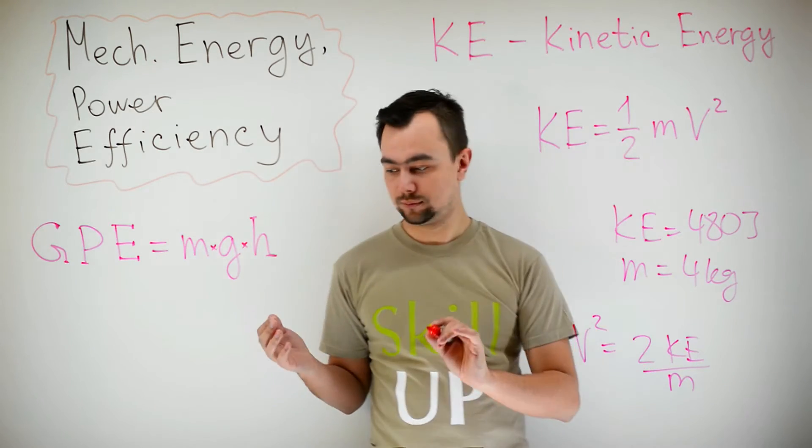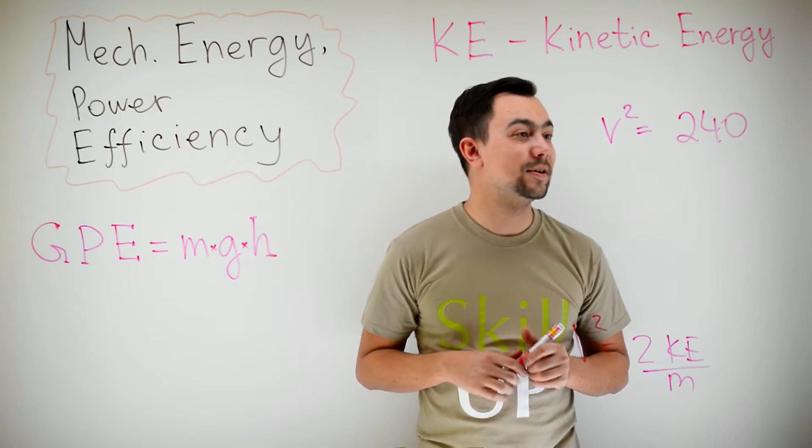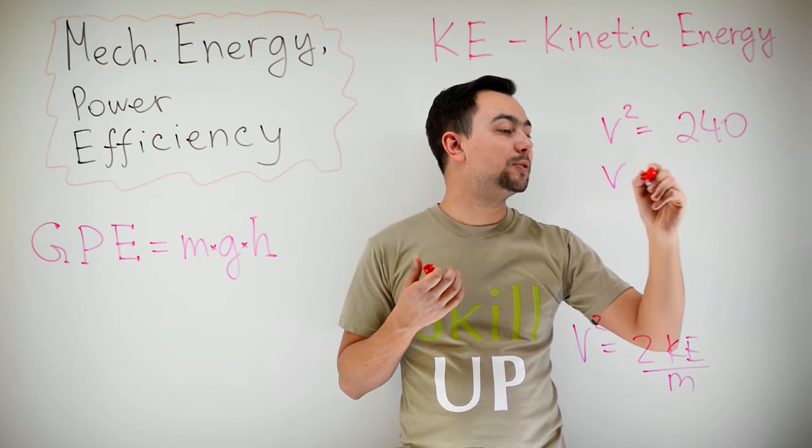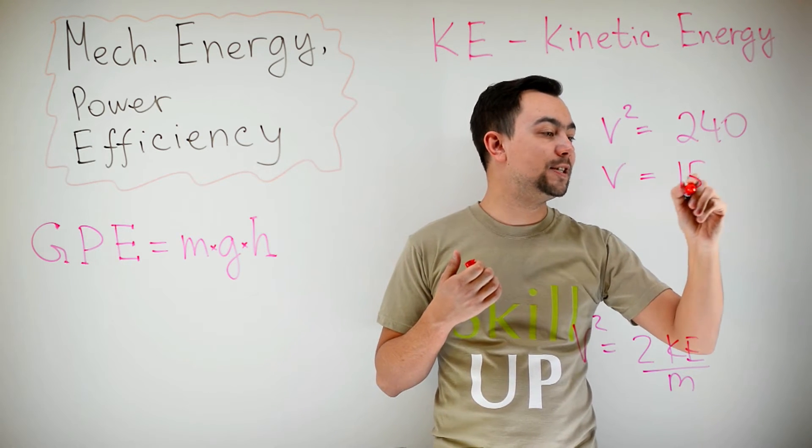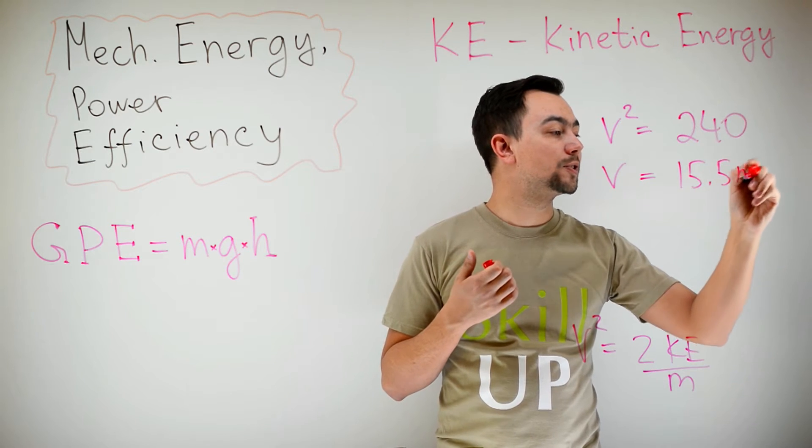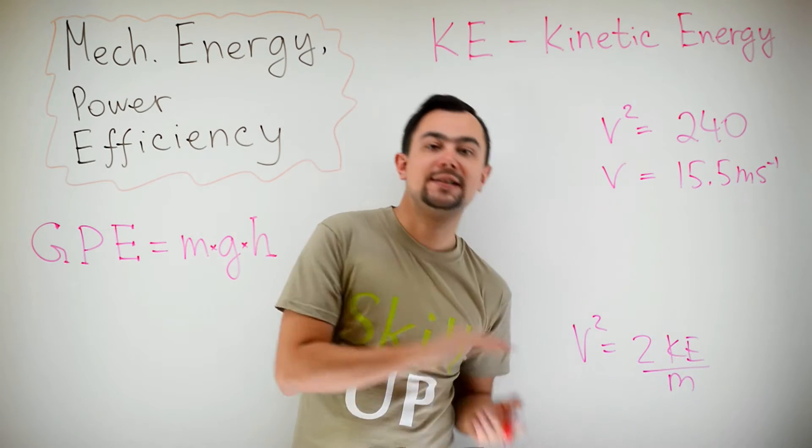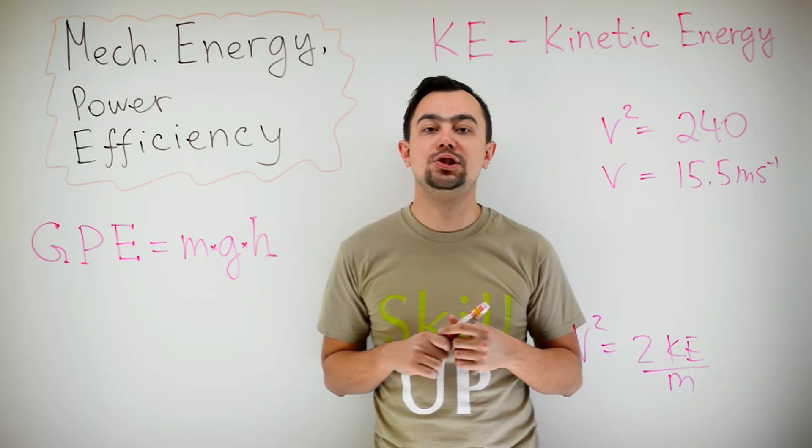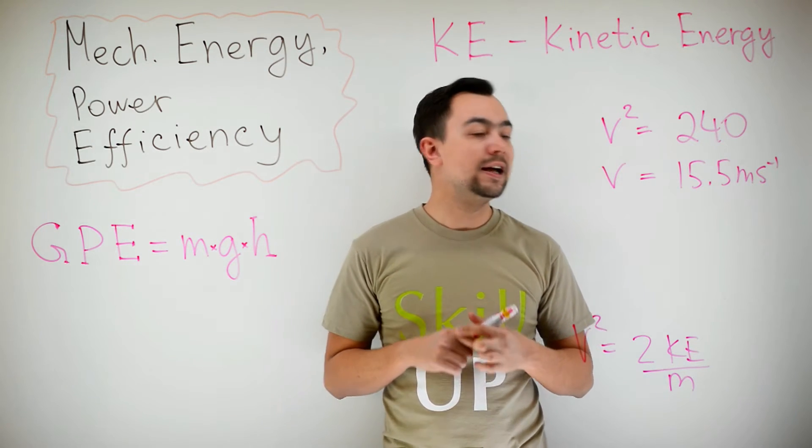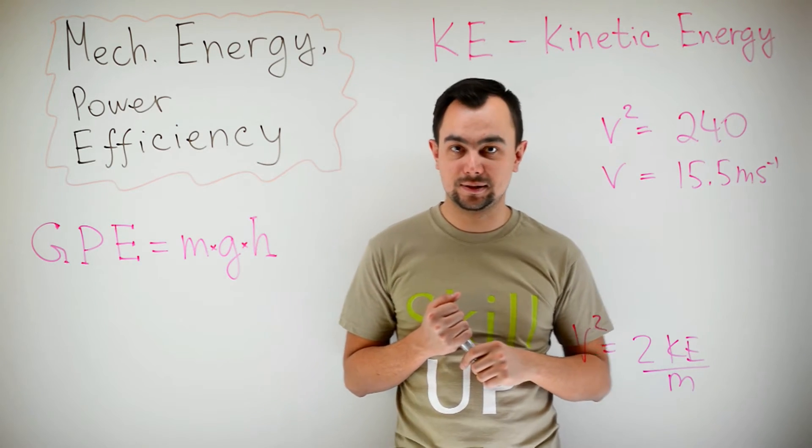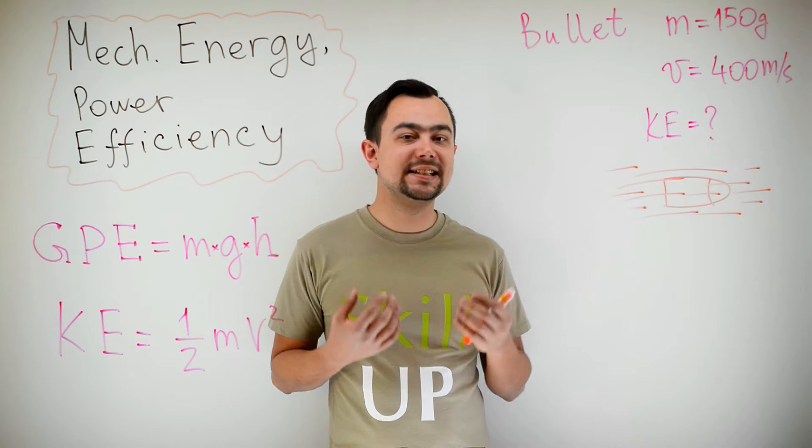So v squared is 240. That is, v equals approximately 15.5 meters per second. So the brick, just before hitting the ground, has 480 joules of kinetic energy and a speed of approximately 15.5 meters per second.